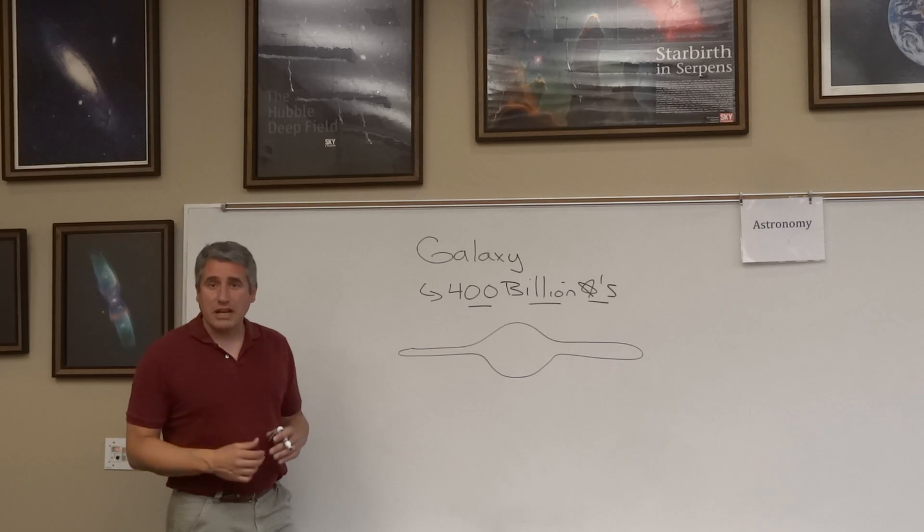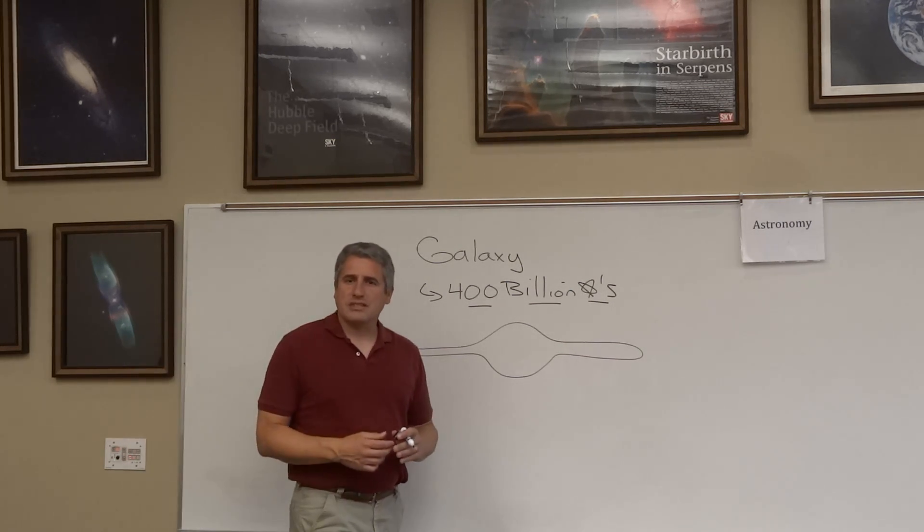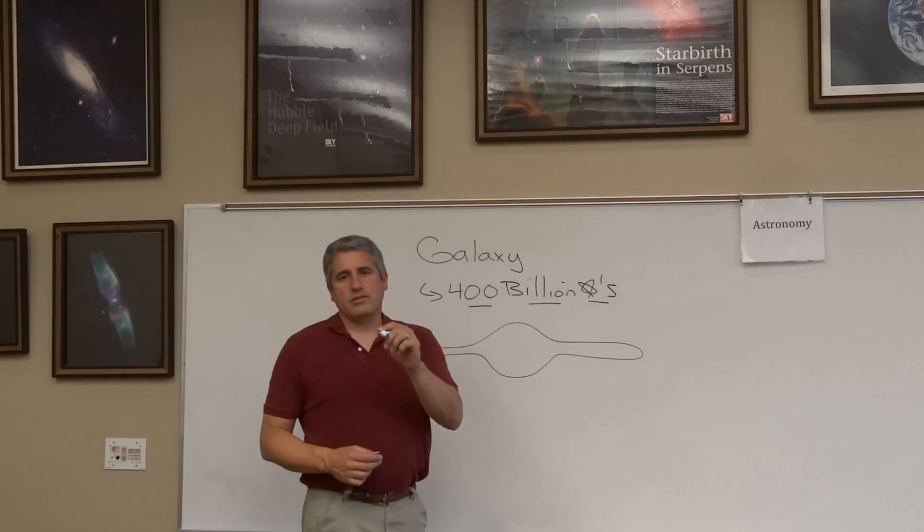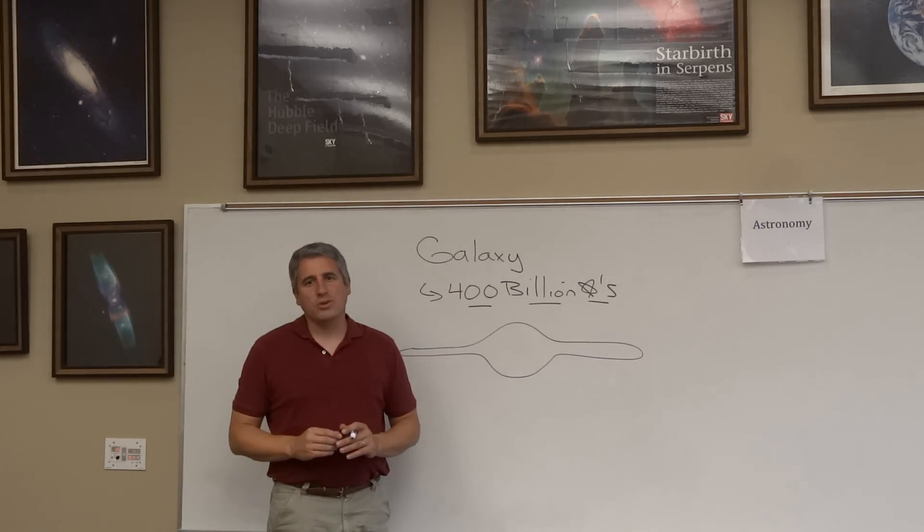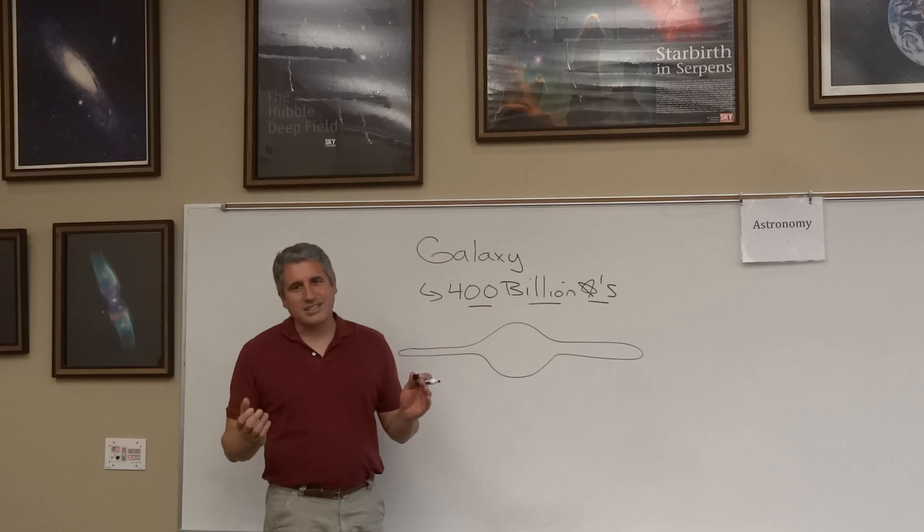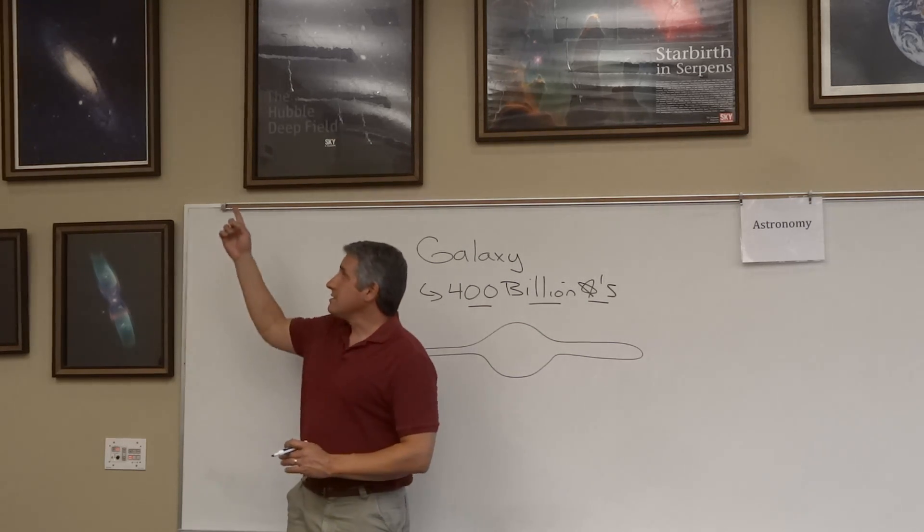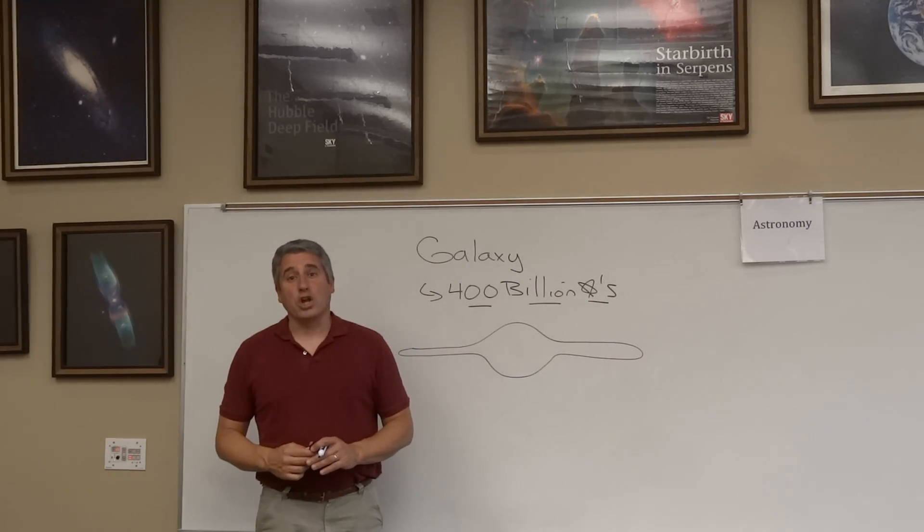When you go outside on the darkest of nights, you might see 5,000 or 6,000 objects. Every one of those objects is in our galaxy, with the exception of a tiny little patch in the constellation of Andromeda. That is the next galaxy over, at least the next large galaxy over.